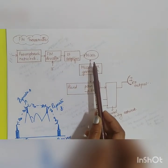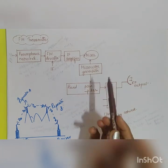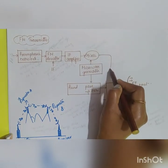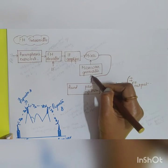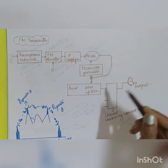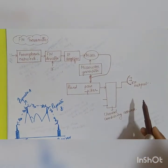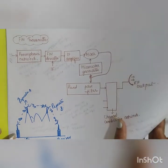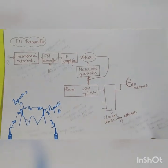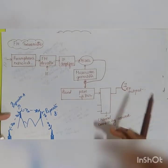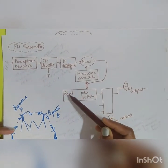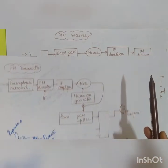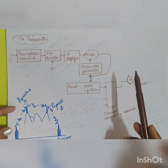The block diagram of the FM transmitter consists of a pre-emphasis network, FM deviator, IF amplifier, mixer, and microwave generator. The output of the mixer goes to a bandpass filter and then to a combining network leading to the RF output. There are two block diagrams: one for the FM transmitter and one for the FM receiver.